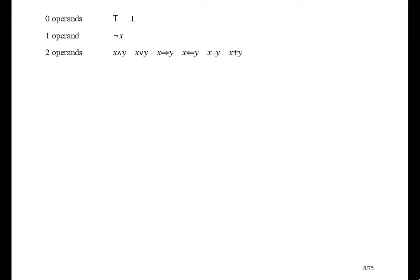The first one is pronounced x and y. It's a conjunction, and its operands are called conjuncts. The next one is pronounced x or y. It's a disjunction, and its operands are called disjuncts. The next one is pronounced x implies y, or x is stronger than or equal to y. It's an implication; its left operand is called the antecedent and its right operand is called the consequent. This one is pronounced x is implied by y, or x is weaker than or equal to y. It's a reverse implication — its left operand is the consequent and its right operand is the antecedent.